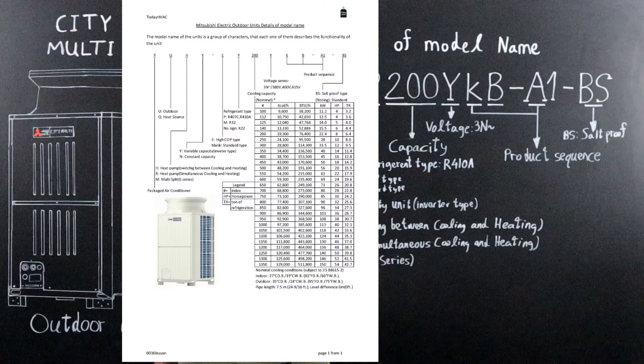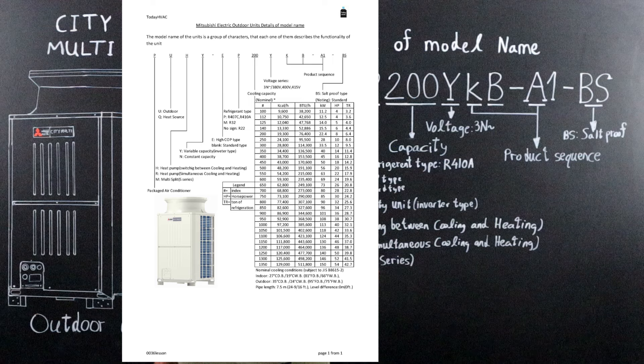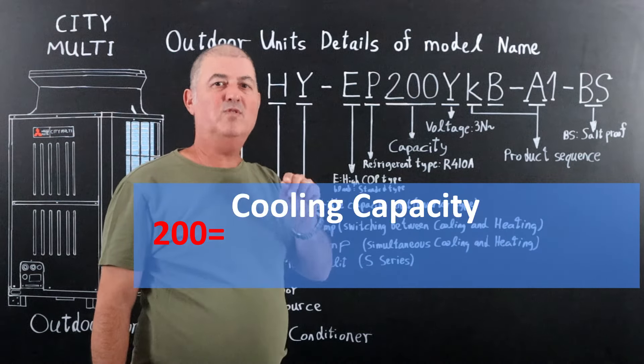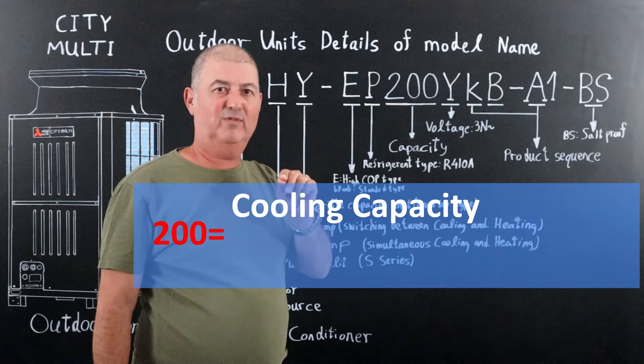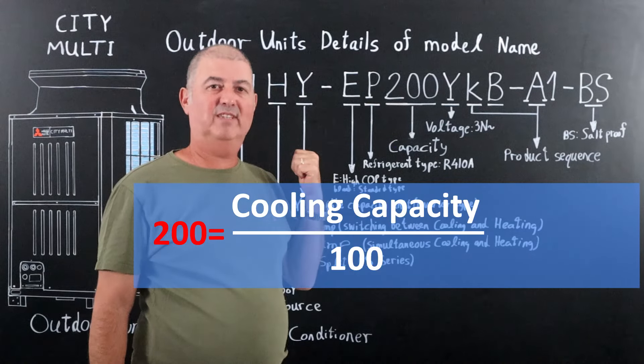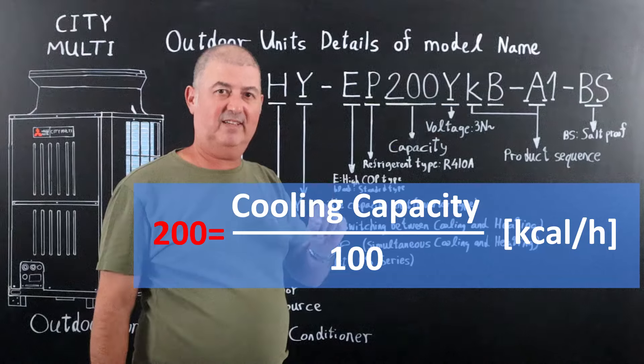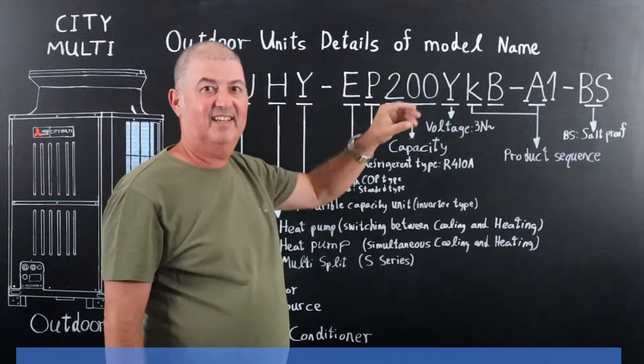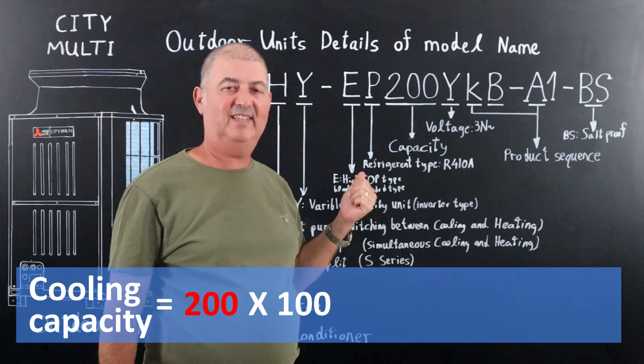200: the number is for the cooling capacity of the unit in kilocalories per hour divided by 100. For example, in this case, the cooling capacity is 20,000 kilocalories per hour.